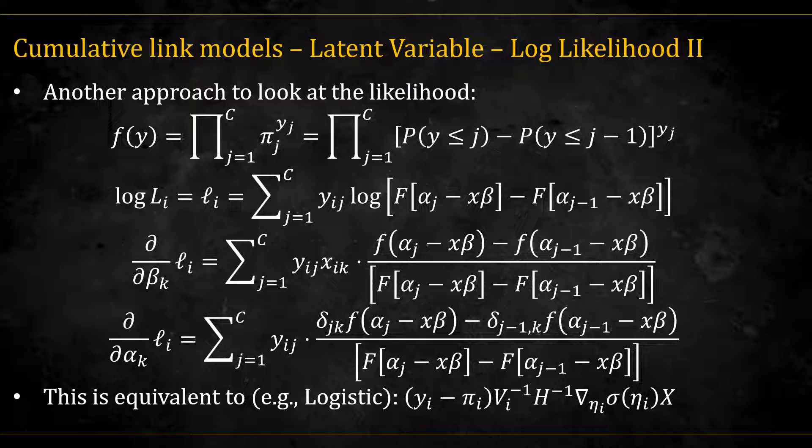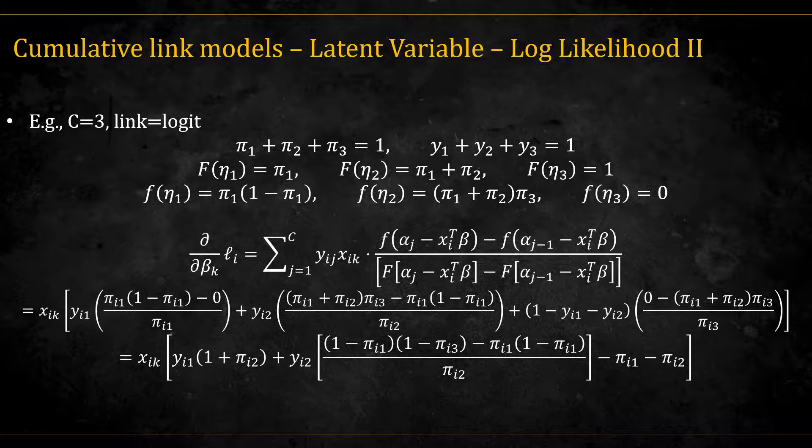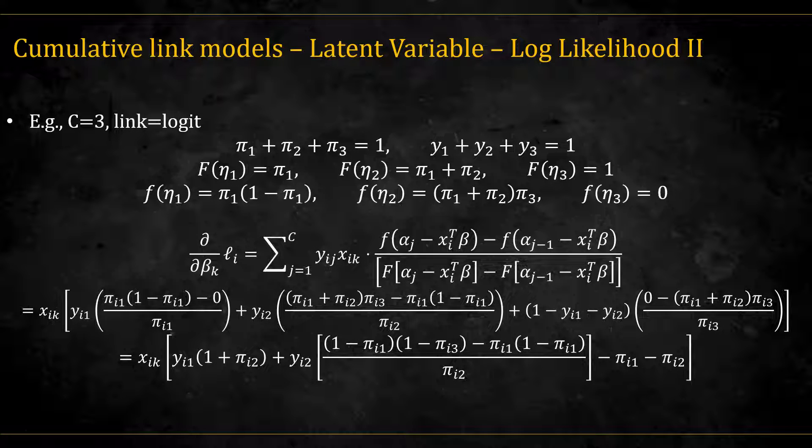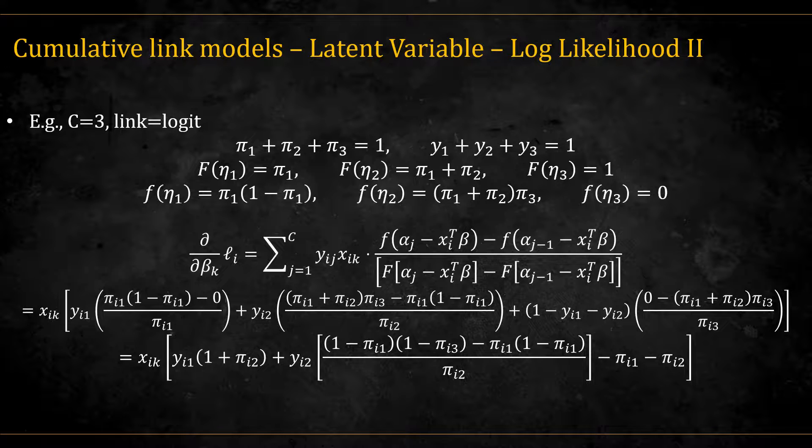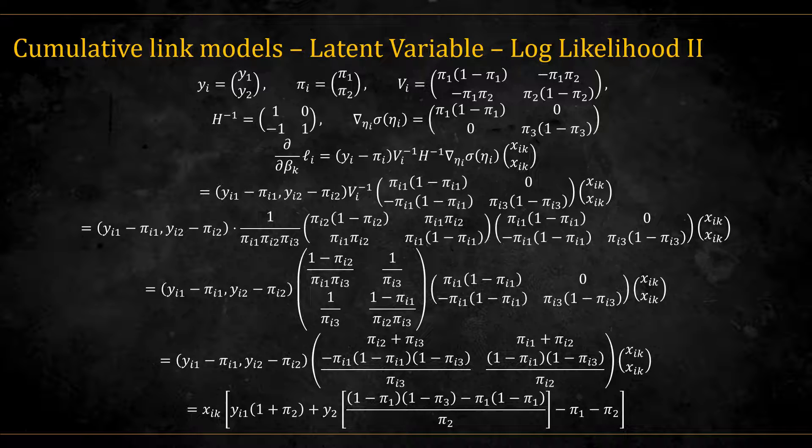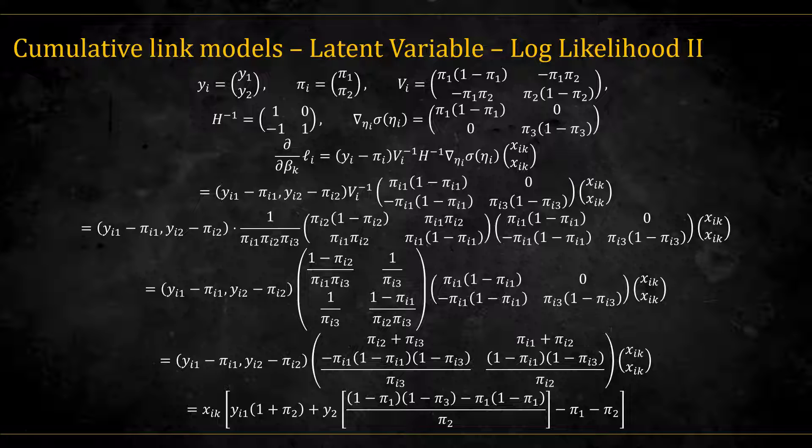The likelihood approach is actually equivalent to the glm approach we've seen before. If you don't believe me, here I show it for the case of 3 categories and the logit link. You can pause the video on this slide and the next one and see they bring the same result. Here I'm using this new approach. And here I'm using the glm approach from before. Notice that after all the hairy math, we arrive at the same thing.